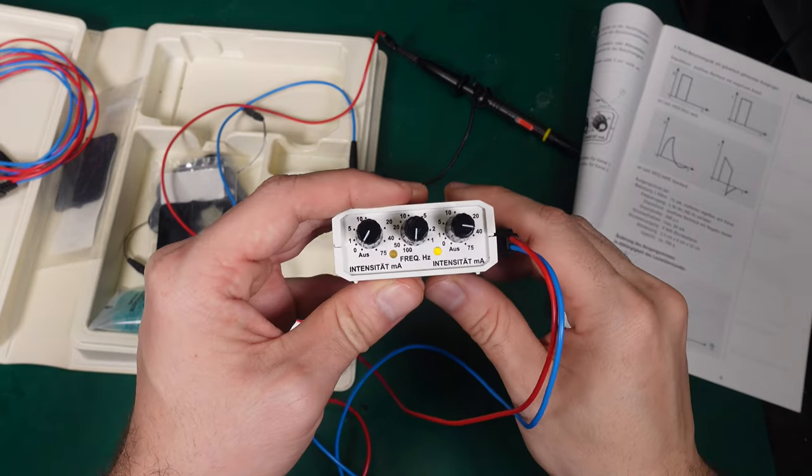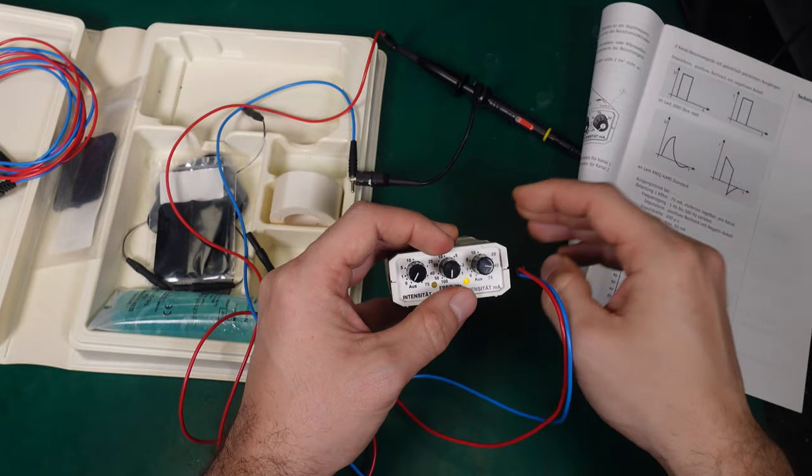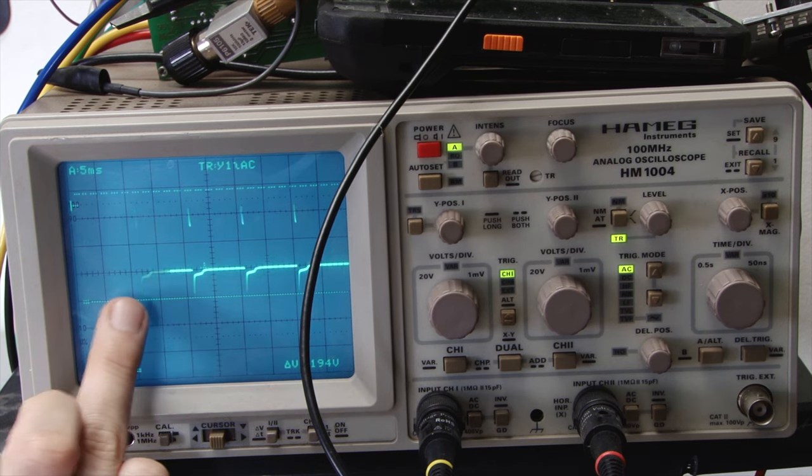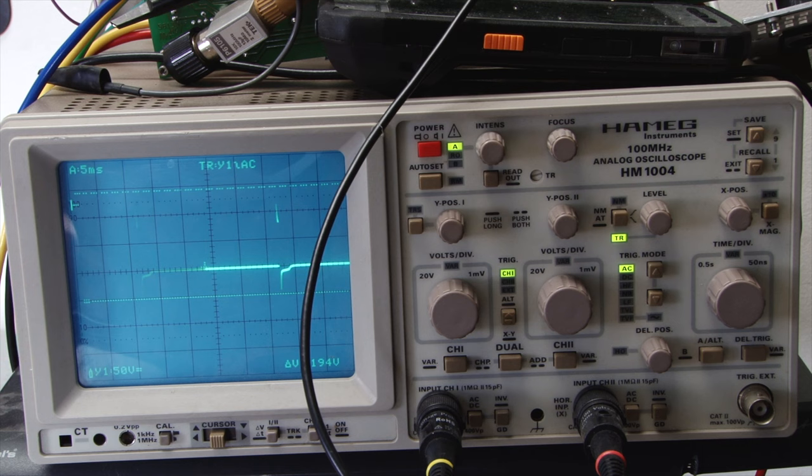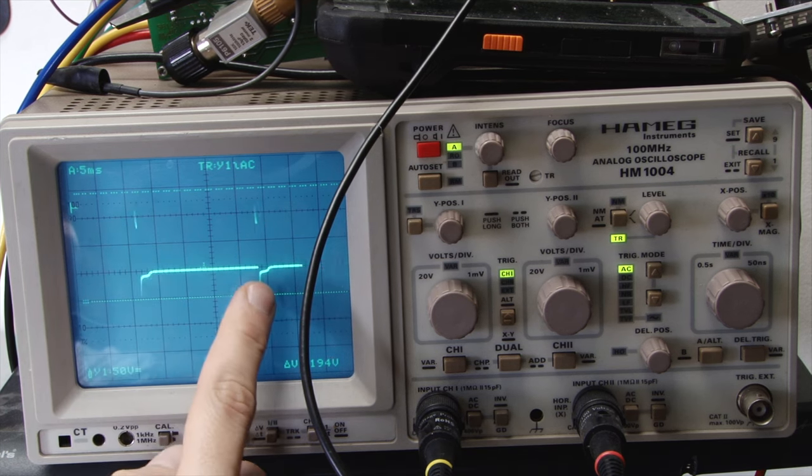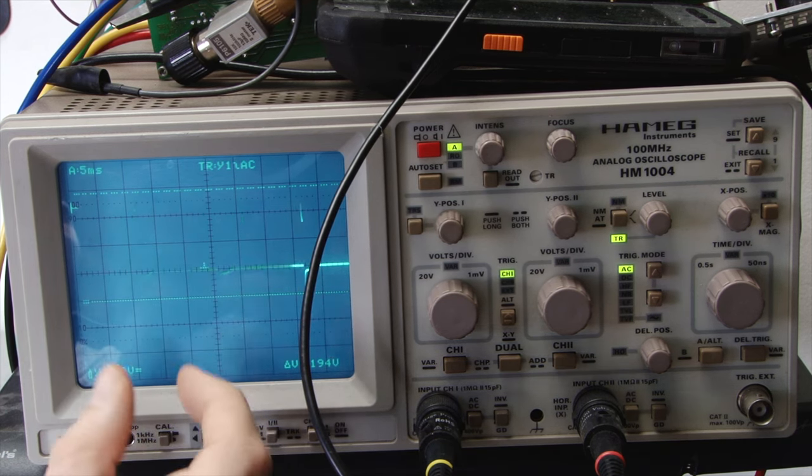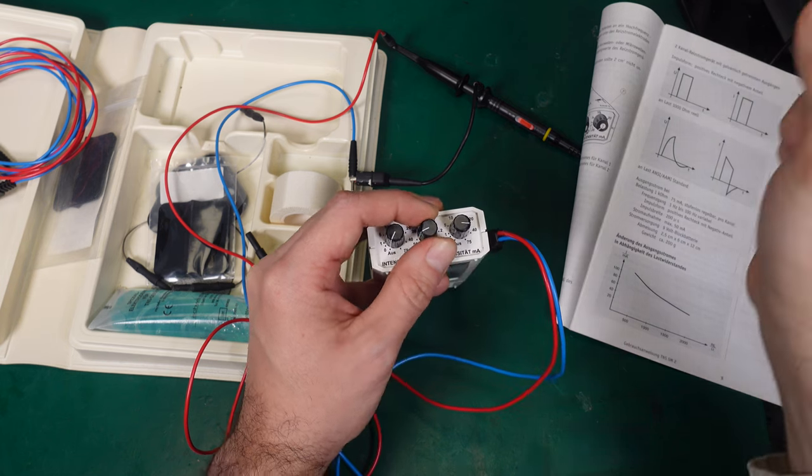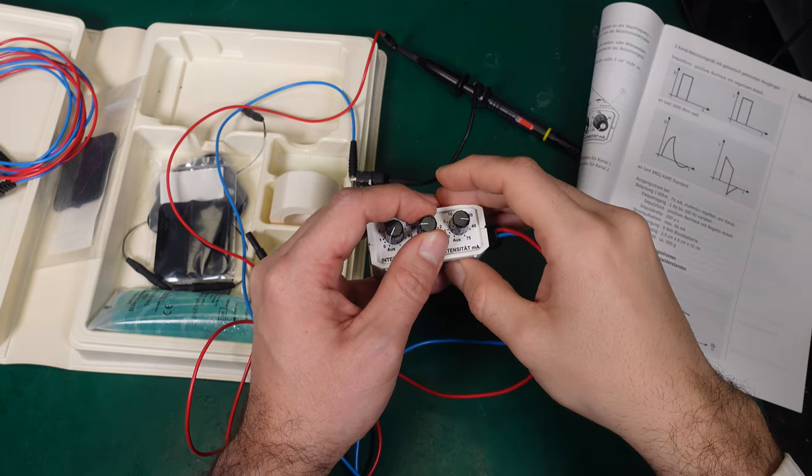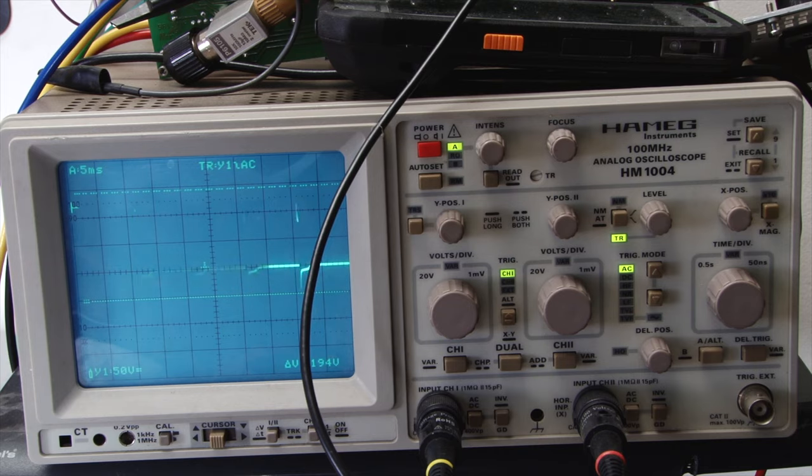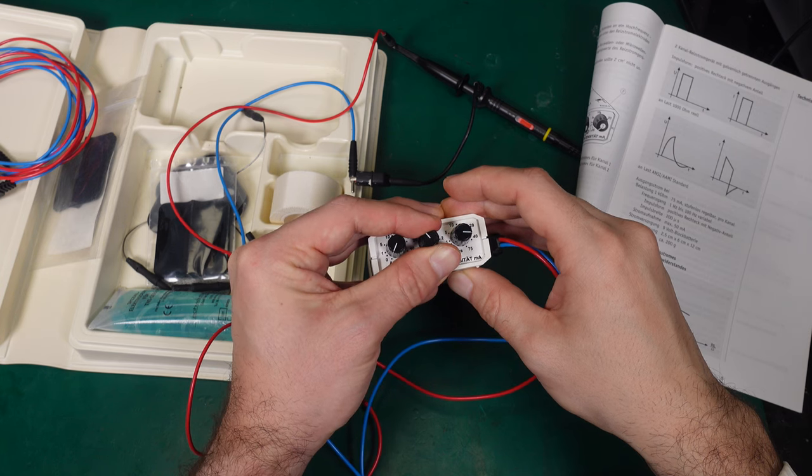On the frequency adjustment, it is quite interesting because it does not change the width of the pulse. As you can see, the pulse is staying the same. We are just changing the frequency of the muscle relax or the frequency of recharging. So it's sending exactly the same pulse even on the lowest and the maximum setting.